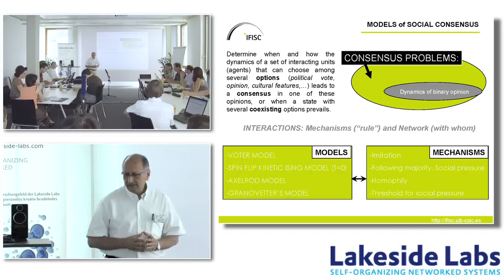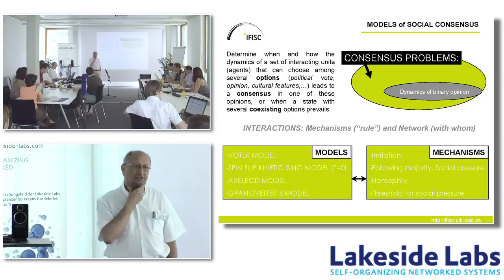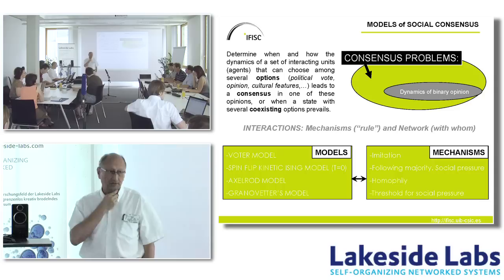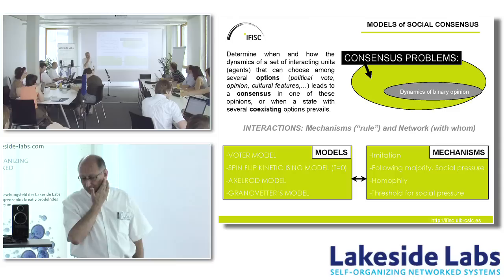What are the ingredients that determine the outcome? The ingredients are the interactions, which have two components. One is the mechanism of interaction — the rule for how an agent interacts with another agent. Second is the network of interactions — who interacts with whom. Here is a table of a few models that have been used, each implementing a different mechanism of social interaction.